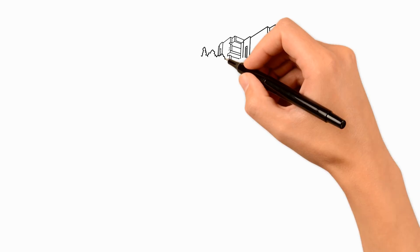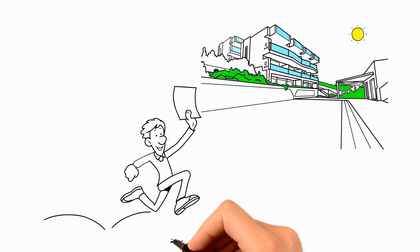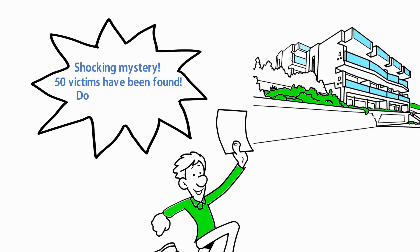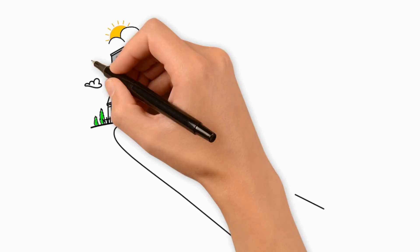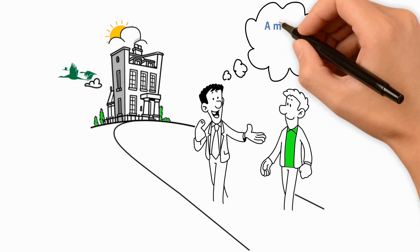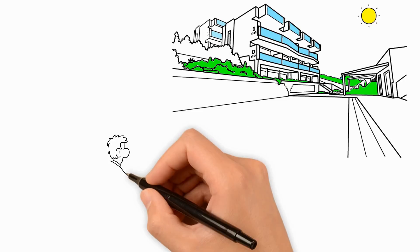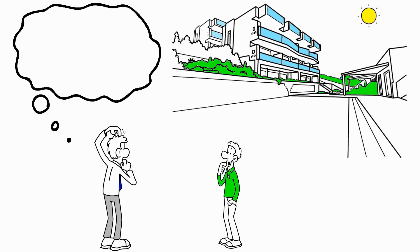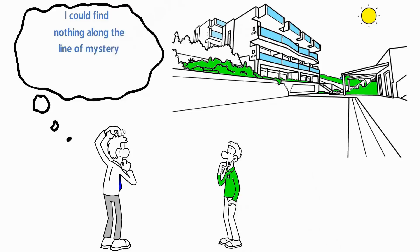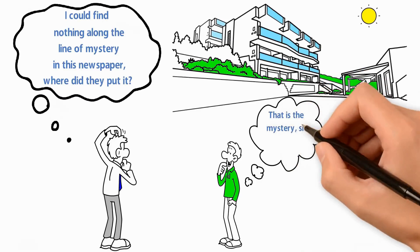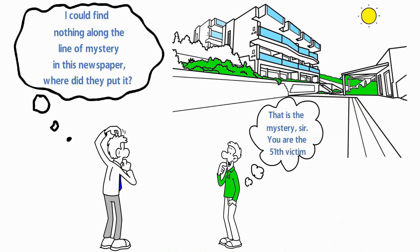Story 5: The Mystery. In the center of a town, a young boy selling newspapers was shouting, "Shocking mystery! 50 victims have been found! Don't miss this top breaking news!" A curious passerby called out to him, "A mystery? I will take one!" After skimming through the newspaper, the passerby asked the boy, "I could find nothing along the line of mystery in this newspaper. Where did they put it?" The boy answered, "That is the mystery, sir! You are the 51st victim!"